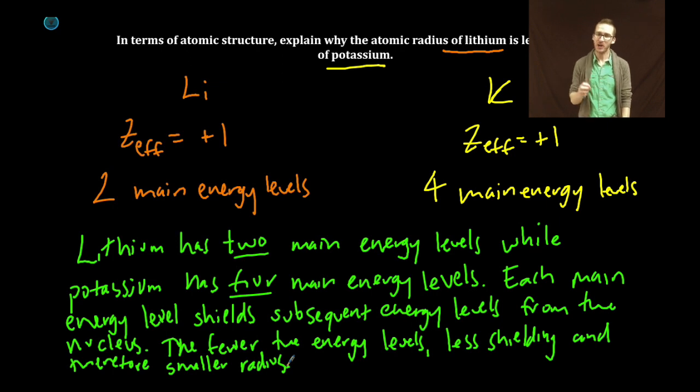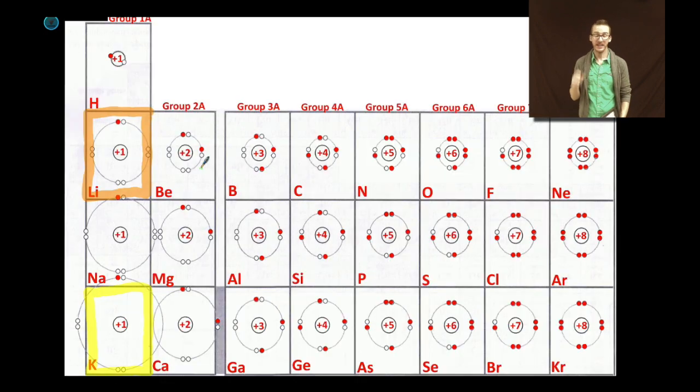Again, important to outline features of the atomic structure for each of the elements and then you're going to either use effective core charge or number of main energy levels in your explanation. It is incorrect and you will receive no points if you simply identify the trend for your explanation. A good explanation is one that uses core charge or number of main energy levels.